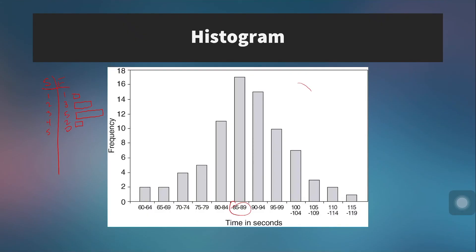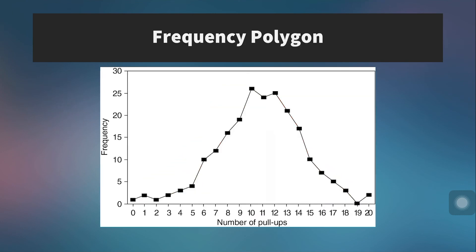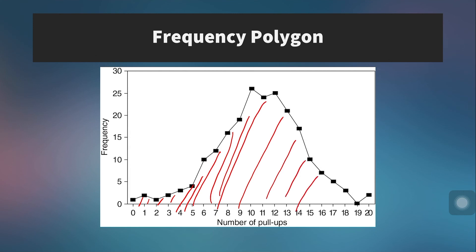Here's a frequency polygon. The reason this is useful instead of a histogram is that we can start to calculate the area under this curve if we wanted to. It's simply a different visual representation of the same data.